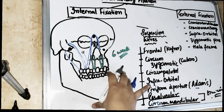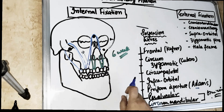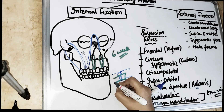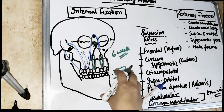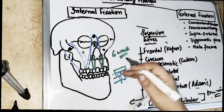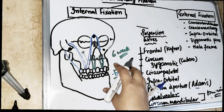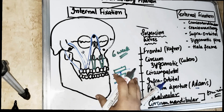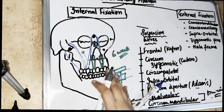The limitation of suspension wires is that they provide only a single point of force application. In contrast, when you fix with plates — placing two plates across the fracture segment — you get multiple fixation points in three dimensions. This is why we prefer open reduction and internal fixation using mini plates and screws, as it provides superior, three-dimensional fixation.